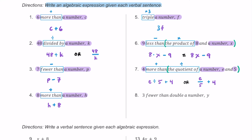For number eight, we have three fewer than double a number y. Three is part of this expression and y is our variable. 'Fewer than' means we're subtracting three from something, and 'double' means multiplying by two. Multiplication comes before subtraction, so we double y first: 2y. Then we subtract three, giving us 2y minus three.